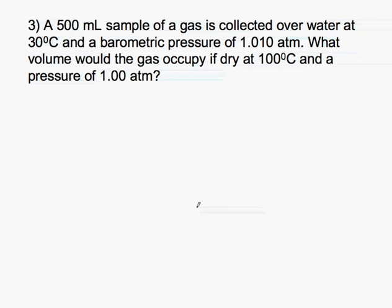The first thing you need to do is label what we have. We have 500 mL, so that's our first volume. We have 30 degrees Celsius, this is our T1, and we have 1 atmosphere, which is the first pressure. So, what volume...